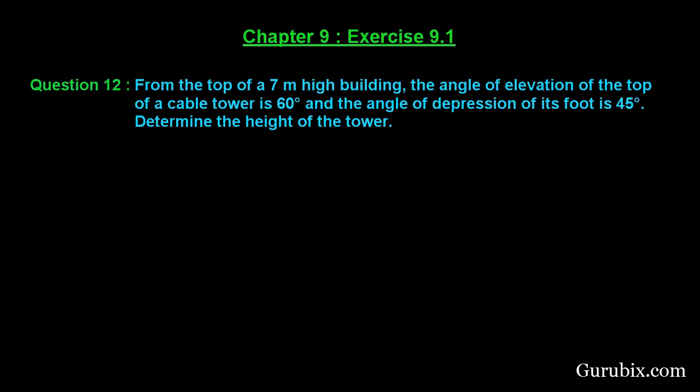Welcome friends. Let us solve question number 12 of exercise 9.1 of chapter 9. The question says: from the top of a 7-meter high building, the angle of elevation of the top of a cable tower is 60 degrees and the angle of depression of its foot is 45 degrees. Determine the height of the tower.